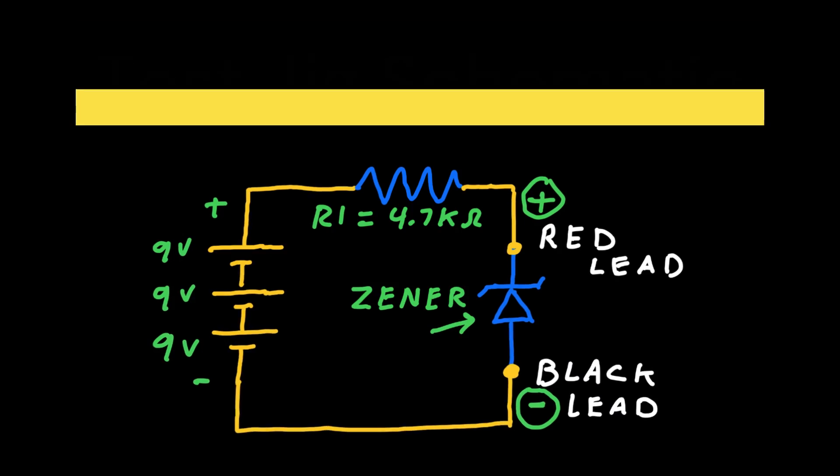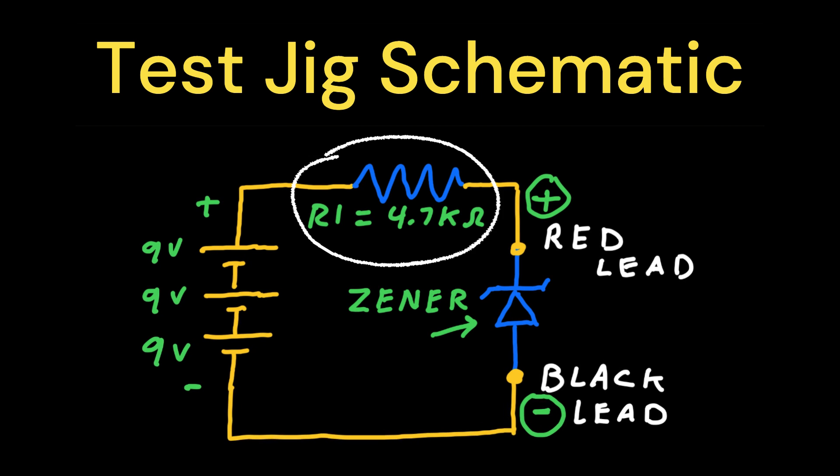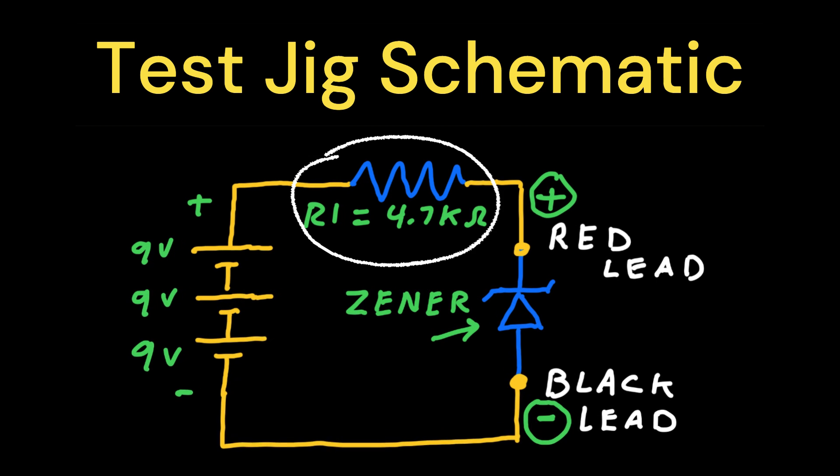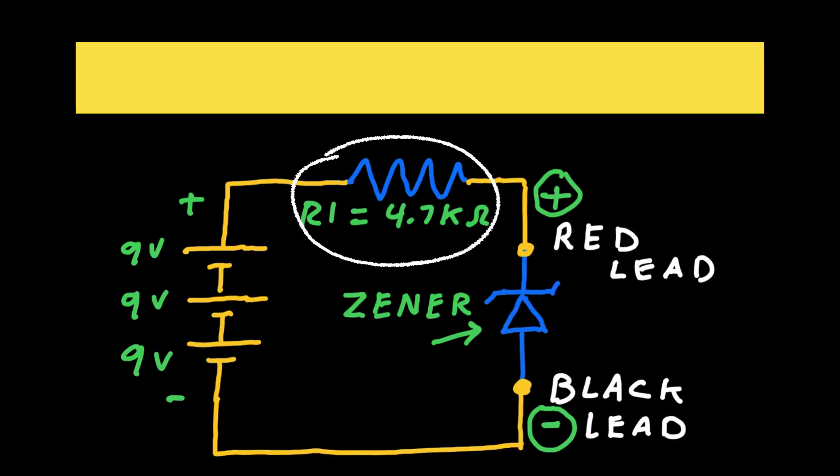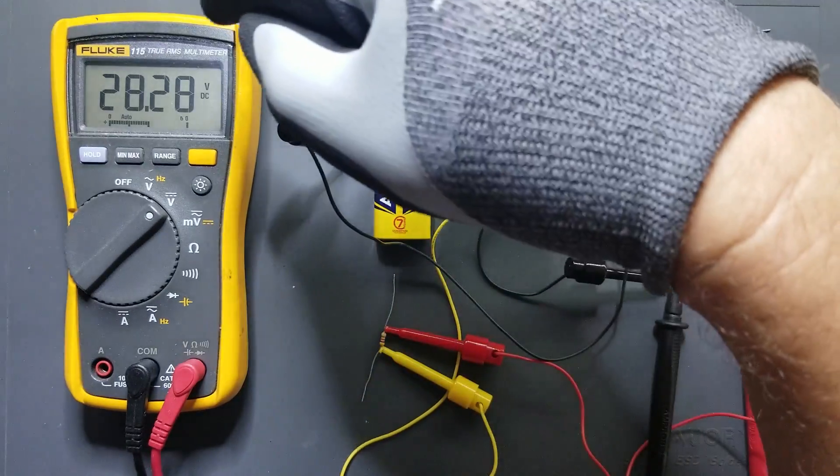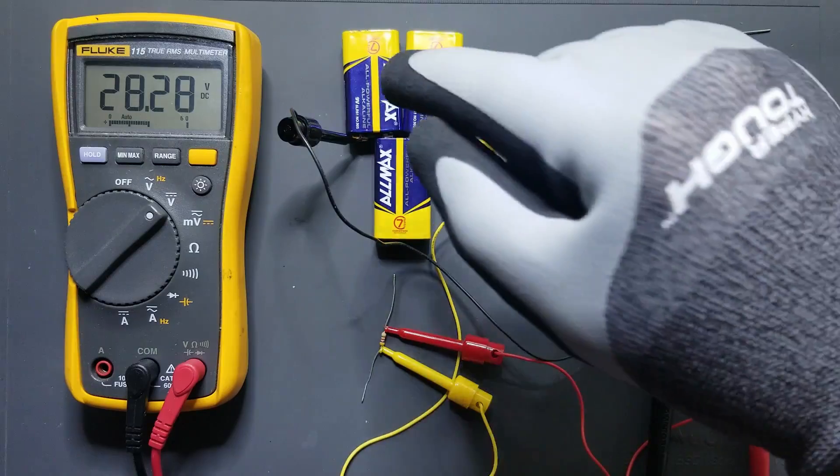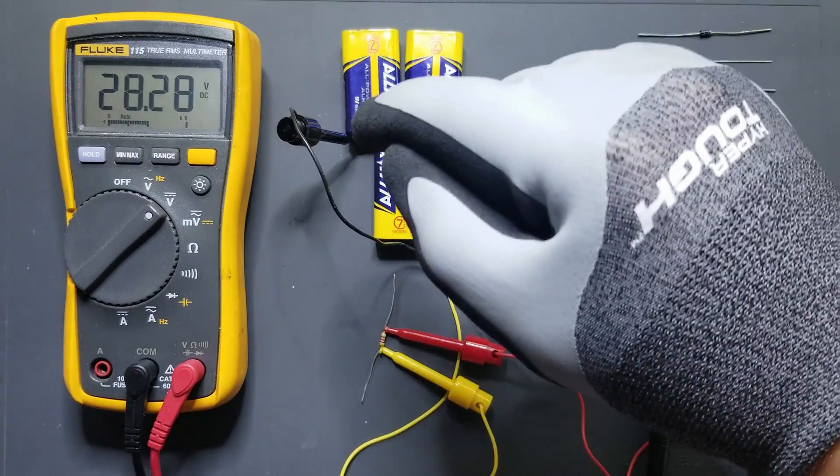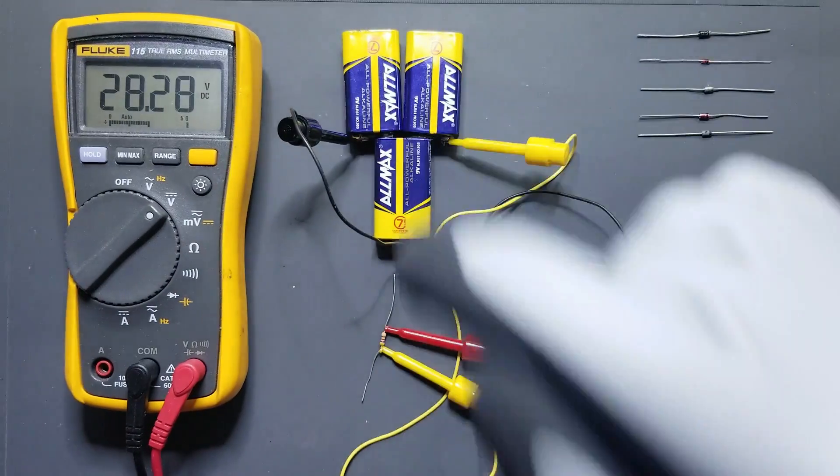Here's the schematic. For R1, any value between 4.7k to 10k ohms will do, and these are very common values. The 28 volts we have here is the three 9 volt batteries connected end to end, which will allow you to test Zener diodes for up to 25 volts.